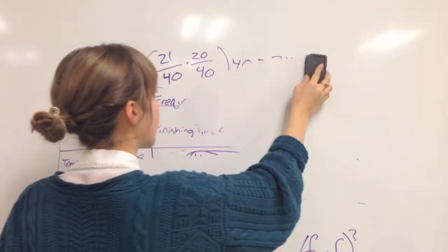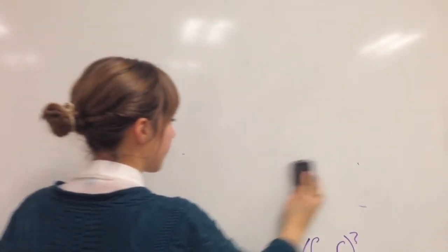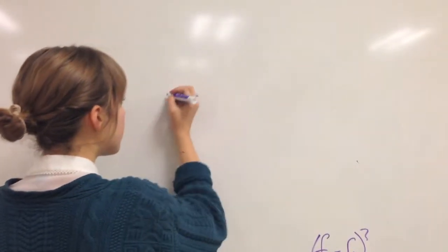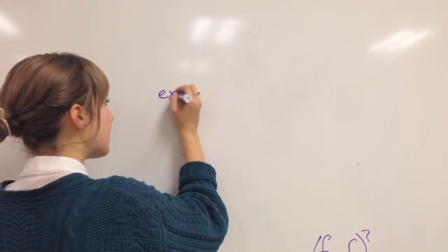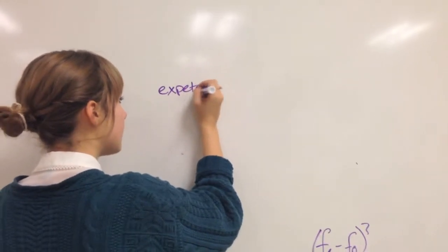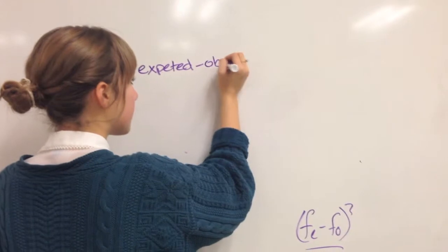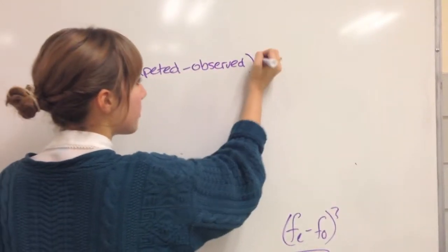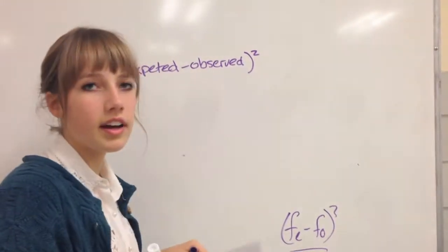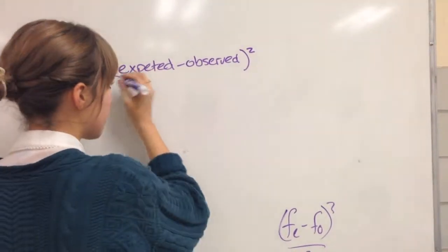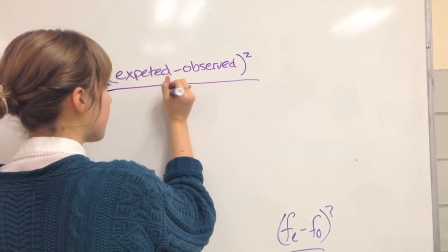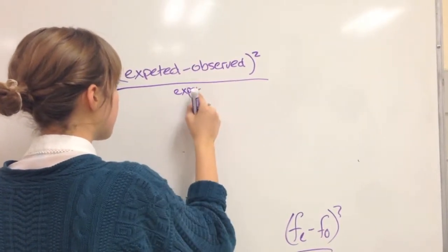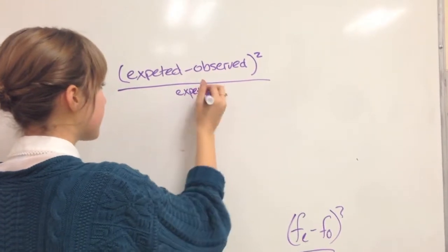Your equation is probability of the expected value happening minus the probability of the observed value happening. And then you square that, so all of your values will be positive because you're squaring it. And then you subtract that by the probability of the expected value.